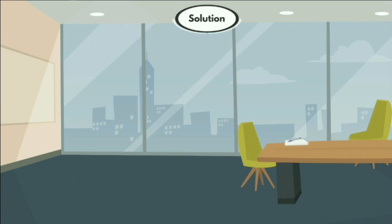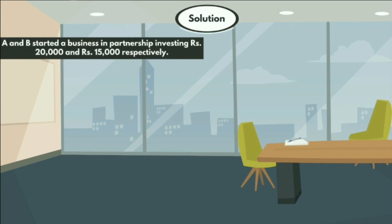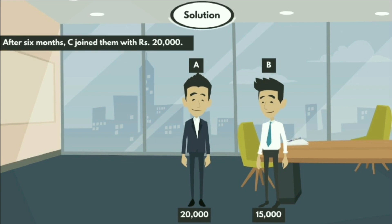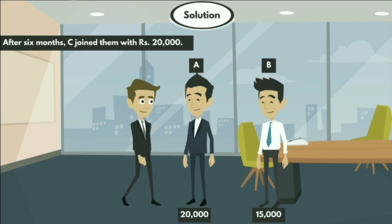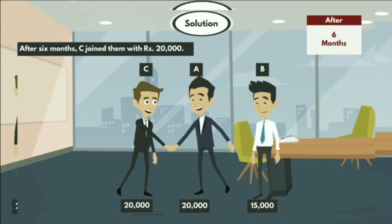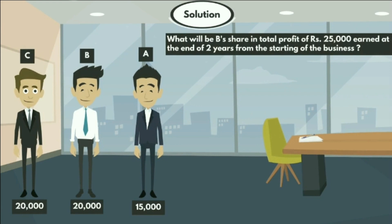In the statement, A and B started a business in partnership investing 20,000 and 15,000 rupees respectively. After six months, C joined them with 20,000 rupees. The question asks: what will be B's share in the total profit of 25,000 rupees earned at the end of two years from the starting of the business?